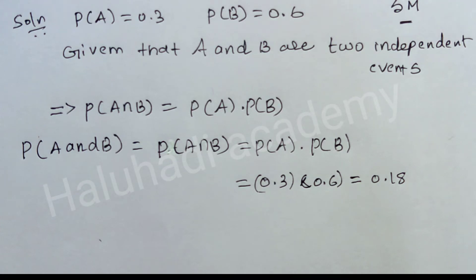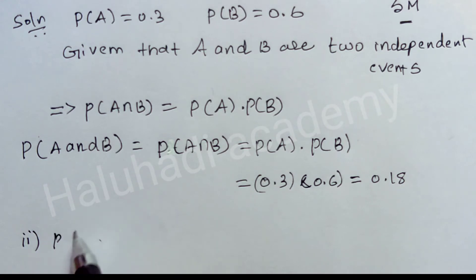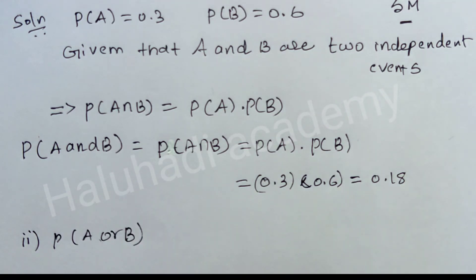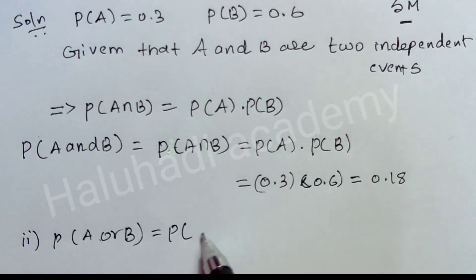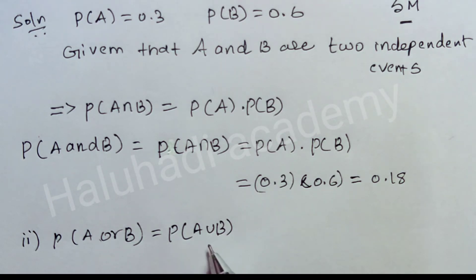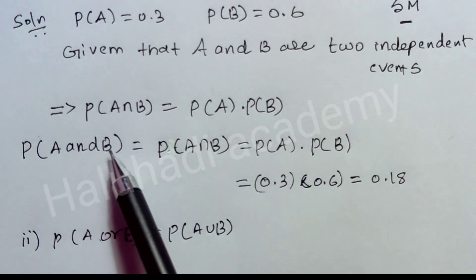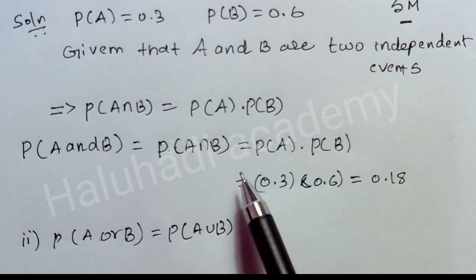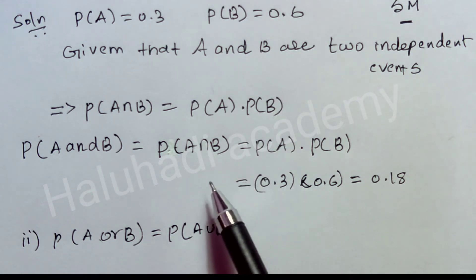Next, we find the second one: P of A or B. Now, P of A and B means P of A intersection B — use the intersection symbol. And P of A or B means P of A union B — use the union symbol. So there is no confusion between 'and' and 'or'.